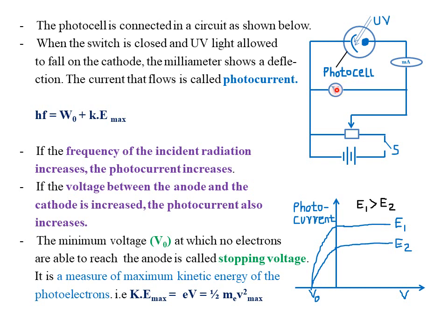The voltmeter also detects some voltage flowing through the circuit, courtesy of Einstein's photoelectric equation. If the frequency of the incident radiation increases, the photocurrent also increases, because increasing the frequency increases the energy of the radiation, enabling it to dislodge more electrons from the cathode. The more electrons emitted and attracted to the anode, the higher the current, since current is the rate of flow of charge. Therefore the higher the frequency, the higher the energy of the incident radiation, the higher the photocurrent.